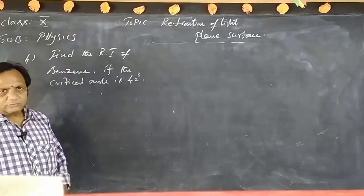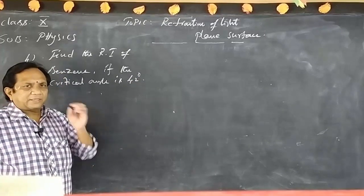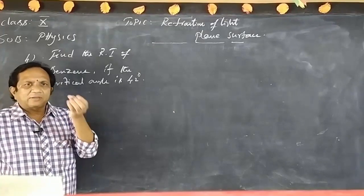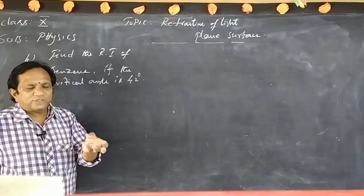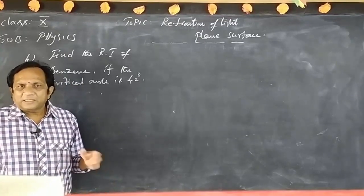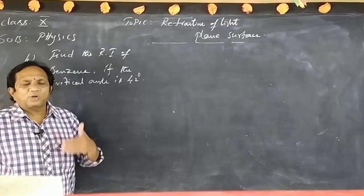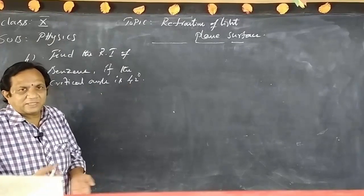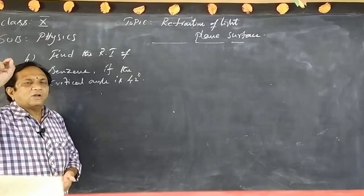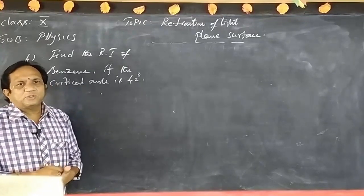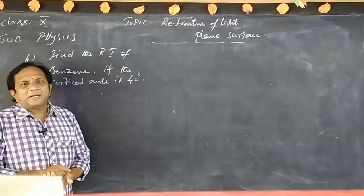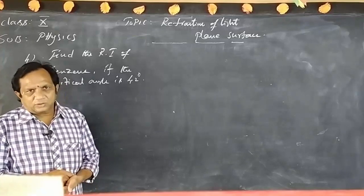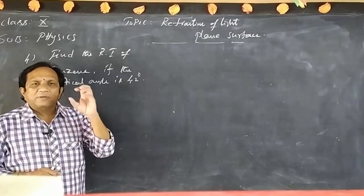You have trigonometrical ratios in mathematics — sin, cos, tan — and their values for standard angles like sin 0, sin 30, sin 45, sin 60, sin 90. You already know those. But for 42 degrees, the value 0.75 and similar values have to be seen in the logarithm book. Unfortunately, logarithm tables are not provided to 10th class students, so you just have to recognize or remember those values.